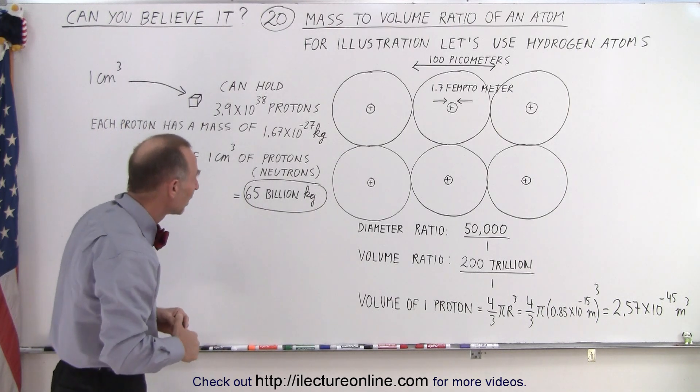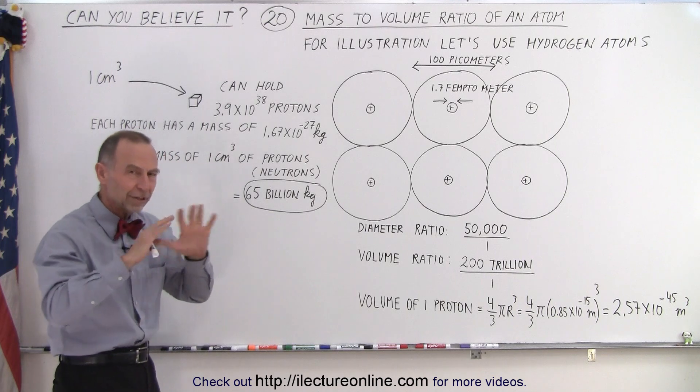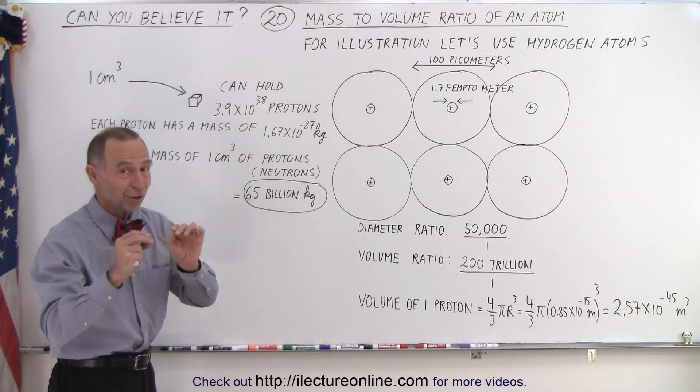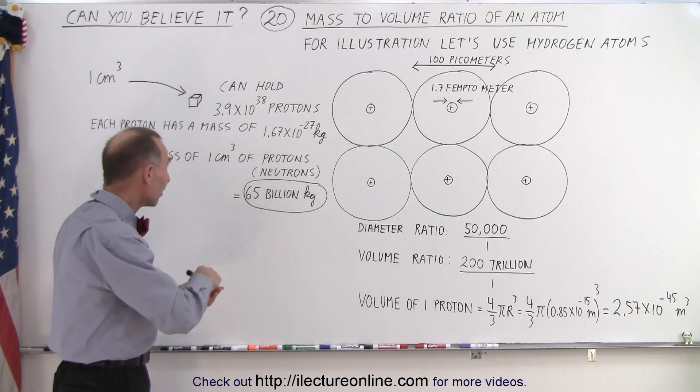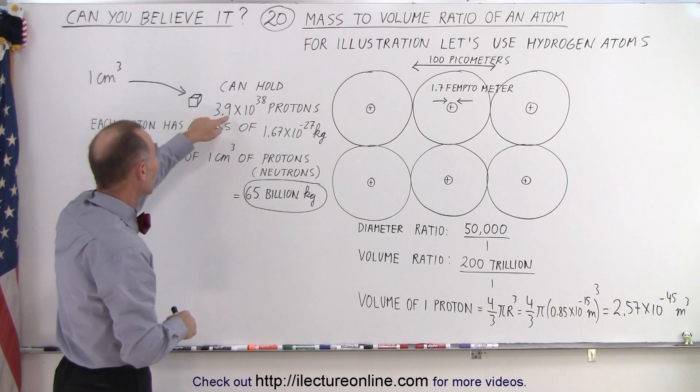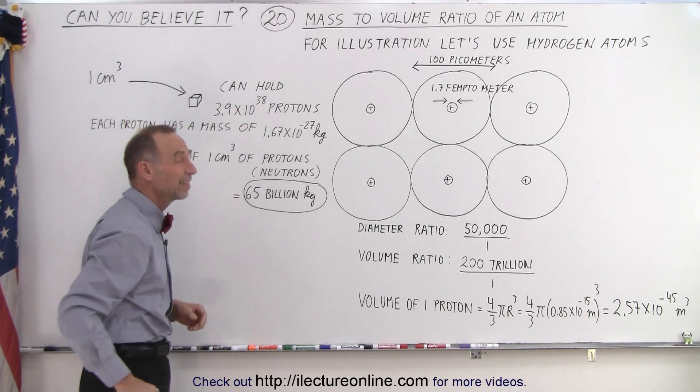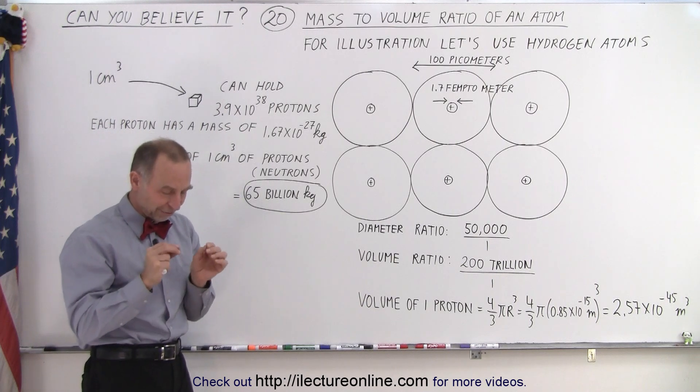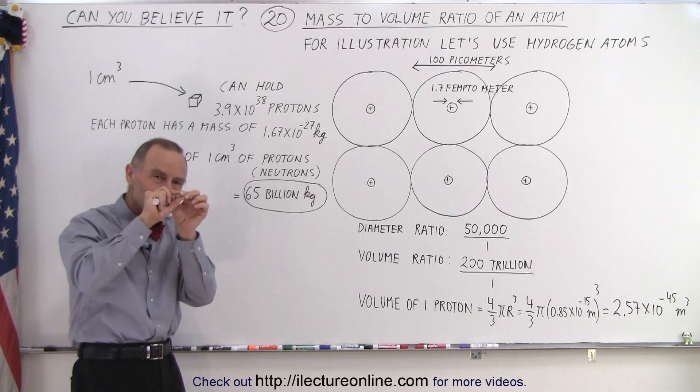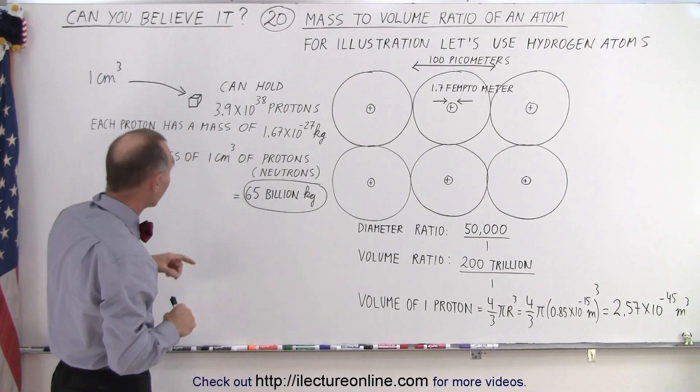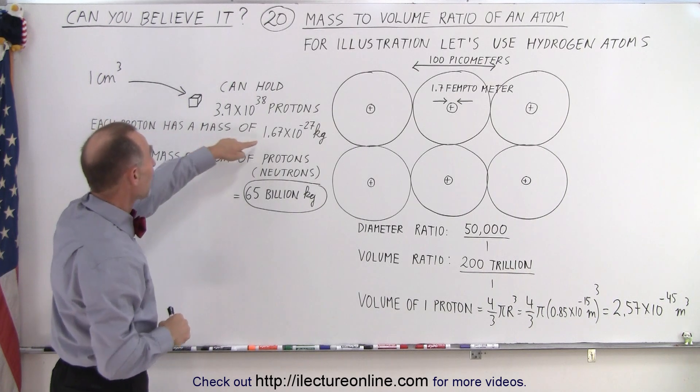So again, let's just forget for a moment that they're positively charged and they repel each other. We can stuff protons into a little cube—well that would be about 3.9 times 10 to the 38 protons that could fit into that little cubic centimeter.